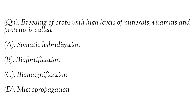Next question: Breeding of crops with high levels of minerals, vitamins and proteins is called: Option A - Somatic hybridization, Option B - Biofortification, Option C - Biomagnification, Option D - Micropropagation. Within the need for better disease-resistant varieties of crop plants, plant breeding techniques are used on a large scale. Such breeding techniques also help in producing improved quality of food that is rich in minerals, vitamins and proteins, thereby improving public health. Such techniques of plant breeding are known as biofortification. Hence Option B, Biofortification, is the right answer.